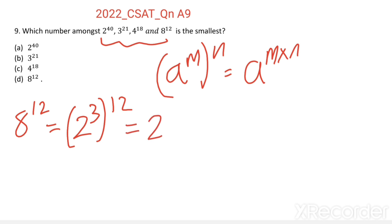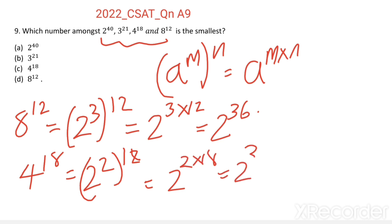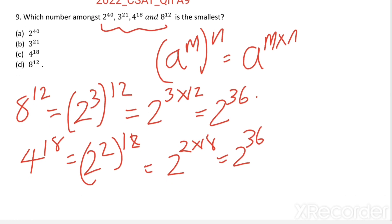Then 4 power 18 equals 2 square all power 18. This is equal to 2 power 2 into 18, equal to 2 power 36. Option c and d are equal and option a...